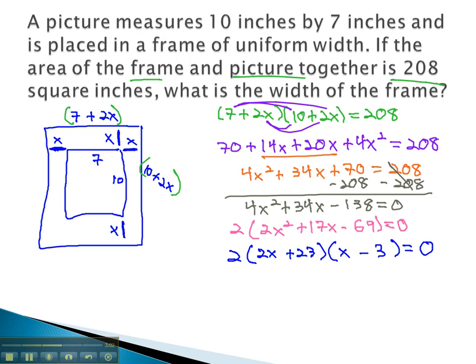If you could not find those two factors, we could have used the quadratic formula on this trinomial, using a as 2, b as 17, and c as negative 69. Both will give us the same final result.